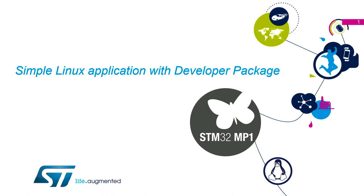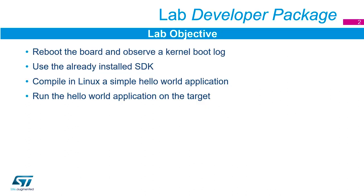This is the first main lab we're going to do during the day. We've already had the getting started lab where we had a play with the board, plugged it in, and had a look at the base demo. This lab is where we're actually going to start doing some work and building an application. The first item is to set up communications between our Linux host on our laptop and the Linux running on our target board, and we'll reboot our target board so we can observe the kernel boot log.